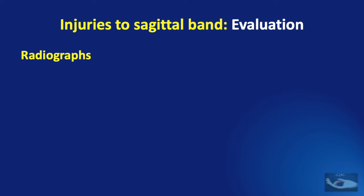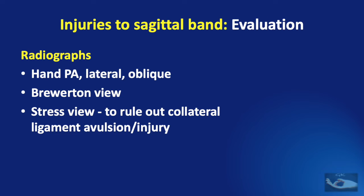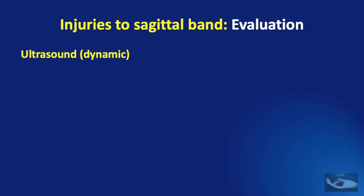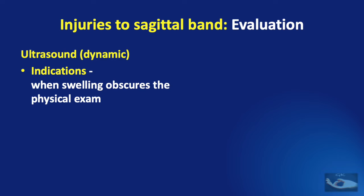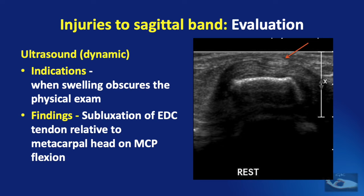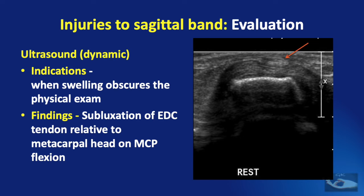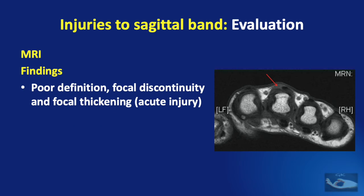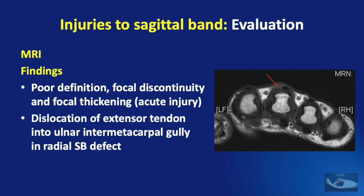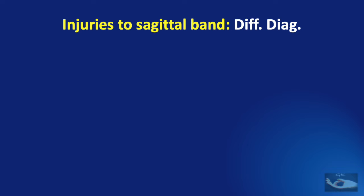The patient's inability to extend the middle finger will also cause weakness of extension of the other uninvolved fingers due to loss of tone in the juncturae tendinum — this is called the extensor quadriga effect. To evaluate further, radiographs of the hand — PA, lateral, oblique views, the Brewerton view, and stress view — need to be taken to rule out collateral ligament injury or avulsion injuries. Dynamic ultrasound evaluation is very important, either as a confirmatory test or when swelling obscures physical examination; subluxation of the EDC tendon relative to the metacarpal head on metacarpophalangeal joint flexion will be noted. MRI findings include poor definition, focal discontinuity, and focal thickening in acute injury, and can demonstrate dislocation of the extensor tendon into the ulnar intermetacarpal gully in radial sagittal band defects.